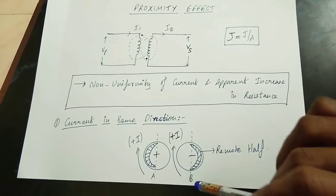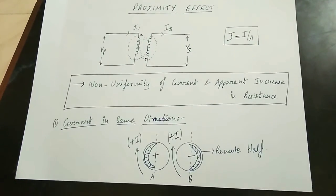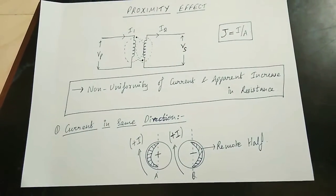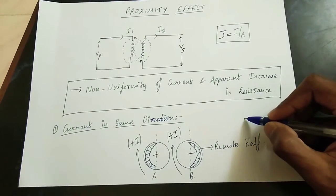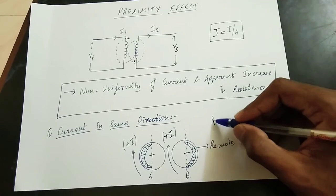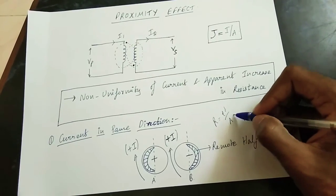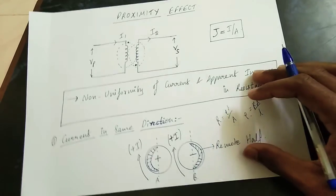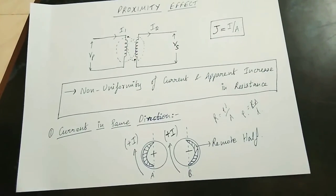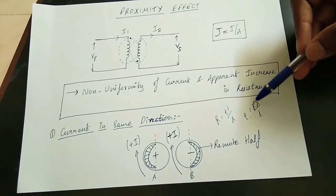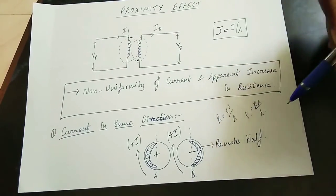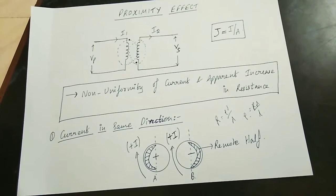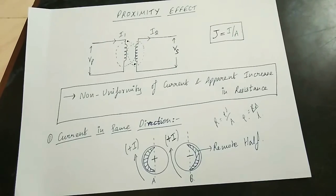The resistance property is increased and the resistivity is higher. The resistivity is given by rho, and R is equal to rho L divided by A. So resistance is directly proportional to resistivity. If the area involved is reduced, the resistance increases. The diameter of the conductor size is increased, and the proximity effect is very high.